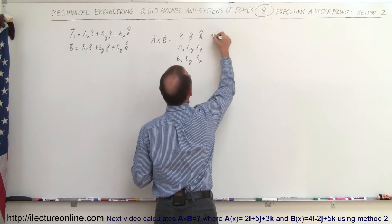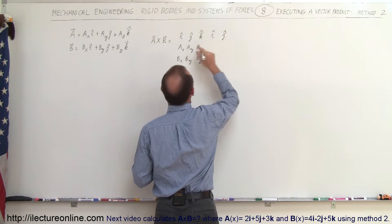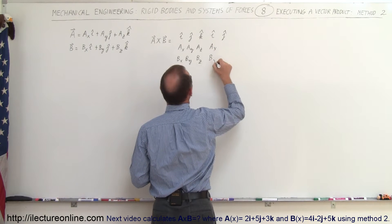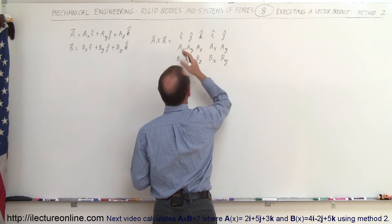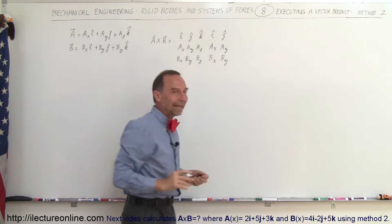So again we write I and we write J, and we write A sub X and B sub X, and A sub Y and B sub Y. So all we've done is added the first two columns again at the very end.